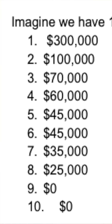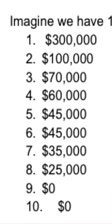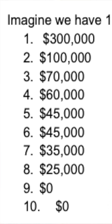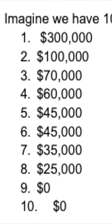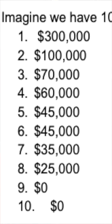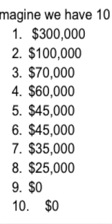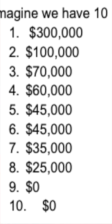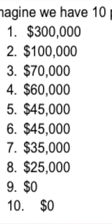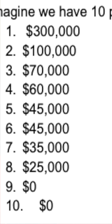Imagine if we have 10 people: one makes $300,000, one makes $100,000, the next makes $70,000, another makes $60,000, then $45,000, $45,000, the seventh person makes $35,000, the eighth makes $25,000, and the last two people are making a whopping goose egg — zero.